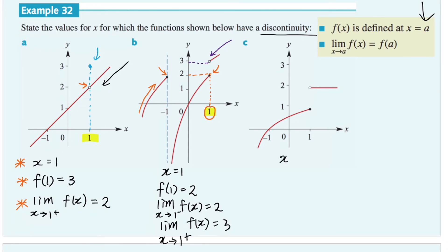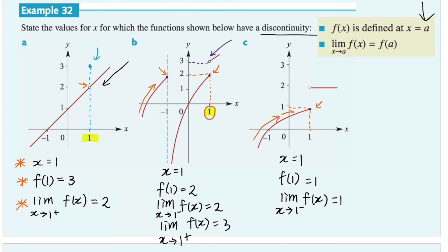Last but not least in the graph examples, we have a discontinuity at x equals 1. The function when x equals 1 equals 1 — it's the closed dot where x equals 1 and y also equals 1. Testing from the left: when x approaches 1 from the negative side, the answer is also 1, so we're approaching 1 from the left and the value approached is also 1. However, the limit when x approaches 1 from the positive side equals 2. Therefore we conclude there is a discontinuity at x equals 1.